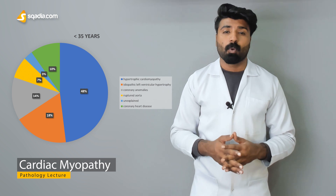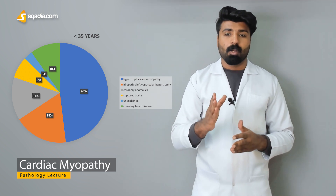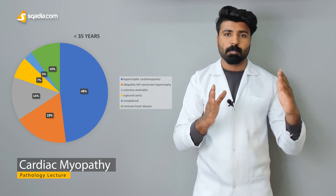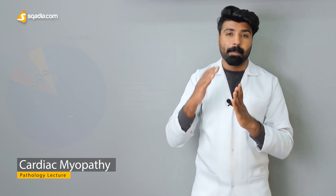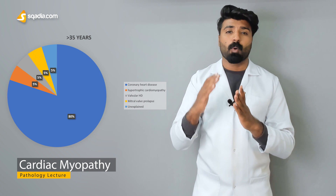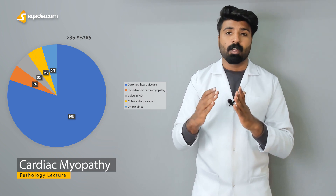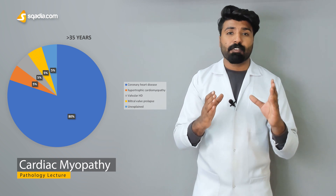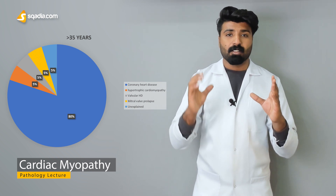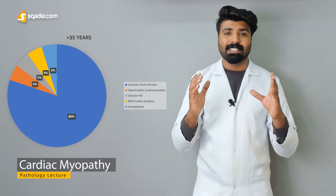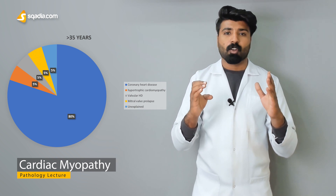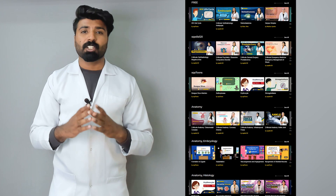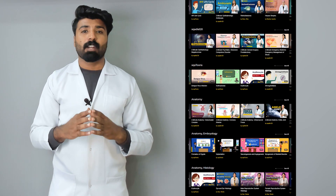Finally, we'll talk about sudden cardiac death — in people below 35 years of age, what is the leading cause of death, and in people above 35, what is the leading cause. We'll differentiate between hypertrophic cardiomyopathy and coronary heart disease as the two major causes of death in these two different age groups.